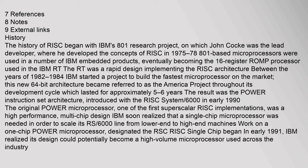IBM started a project to build the fastest microprocessor on the market. This new 64-bit architecture became referred to as the America project throughout its development cycle, which lasted approximately 5 to 6 years. The result was the Power instruction set architecture, introduced with the RISC System 6000 in early 1990. The original Power microprocessor, one of the first superscalar RISC implementations, was a high-performance multi-chip design. IBM soon realized that a single-chip microprocessor was needed to scale its RS/6000 line, and work on a one-chip Power microprocessor began in early 1991.